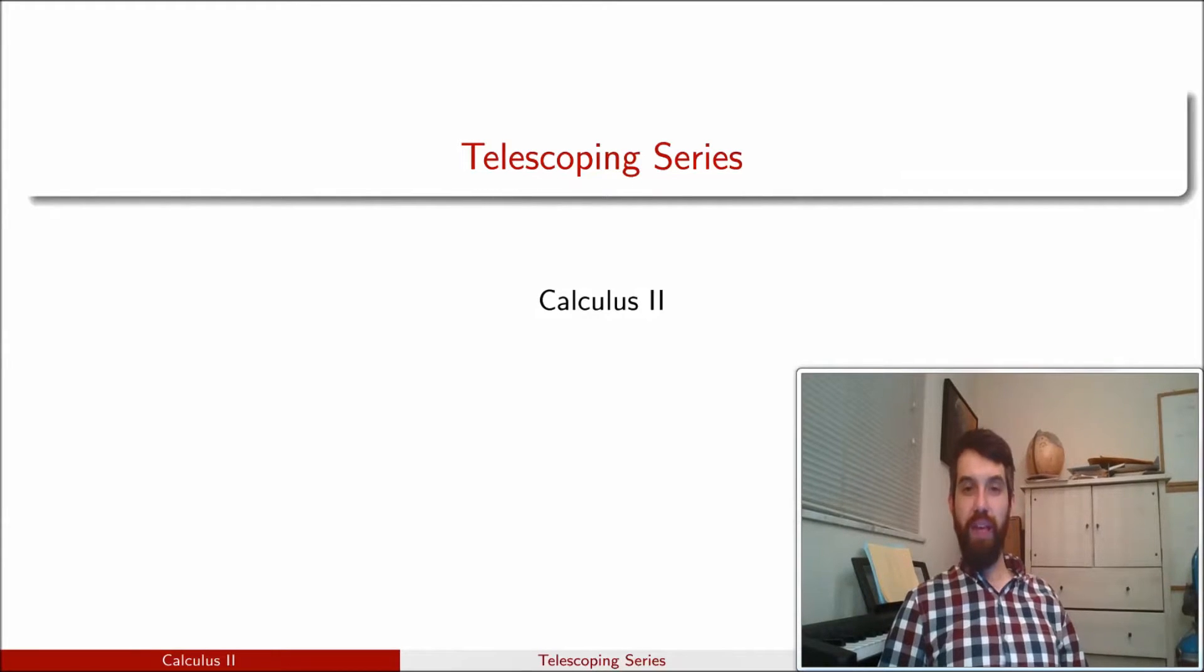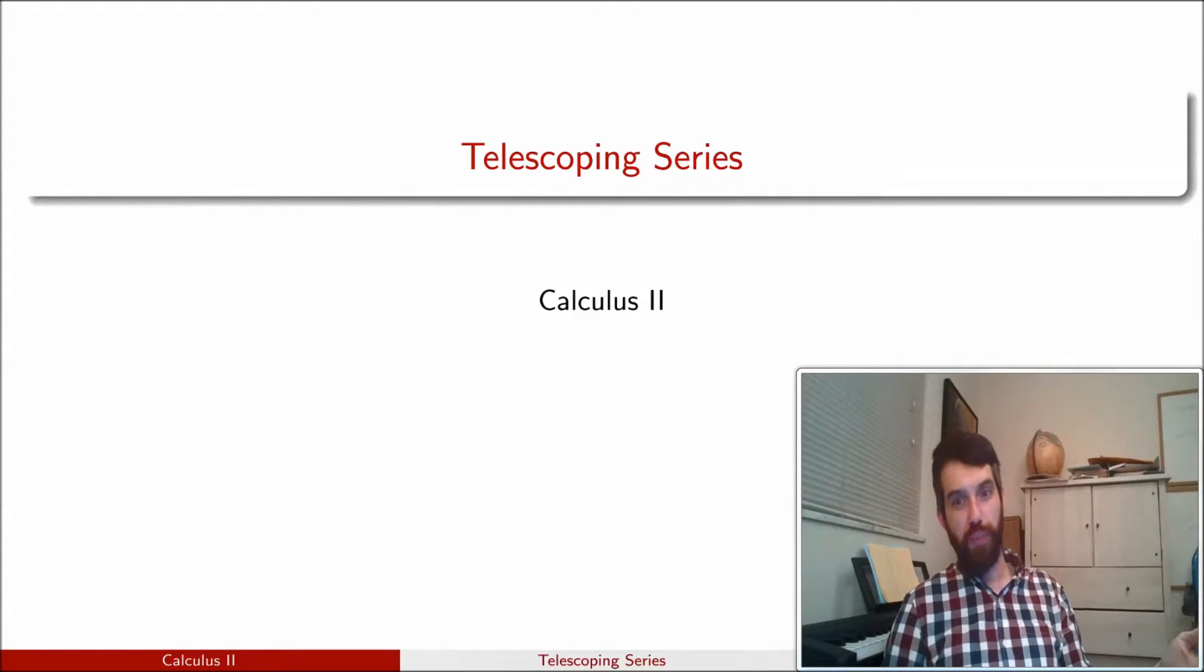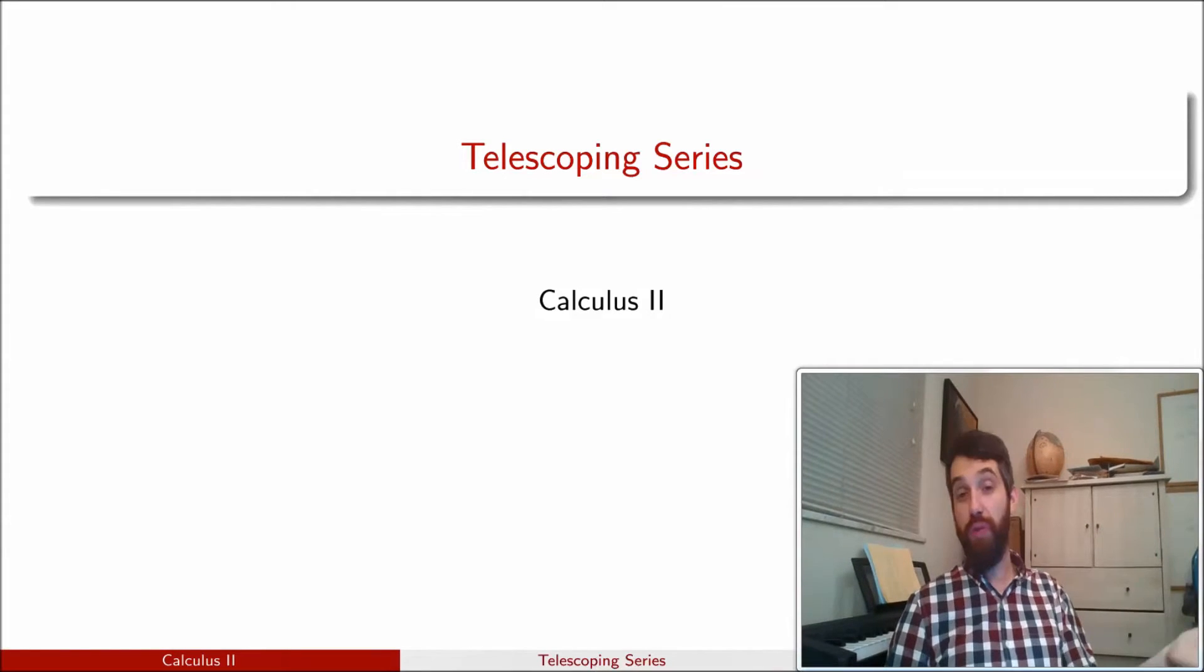When we study series, the main question that we try to answer is convergence or divergence. But if we can, we like to also say, if it converges, what does it converge to? And for the most part, this is actually a pretty challenging problem that we don't have a lot of answers to. For geometric series, we got an answer. We knew that if a geometric series converged, it converged to a over 1 minus r.